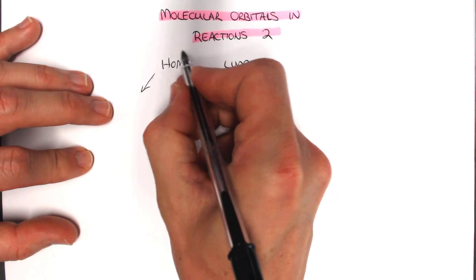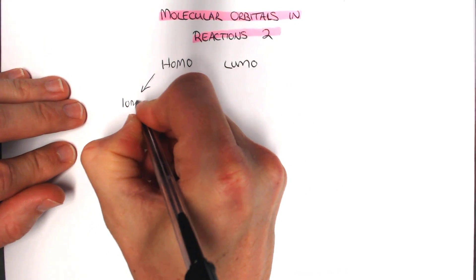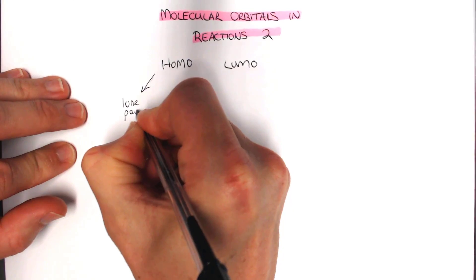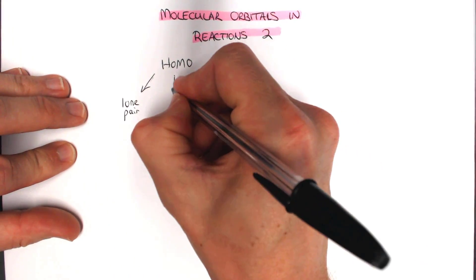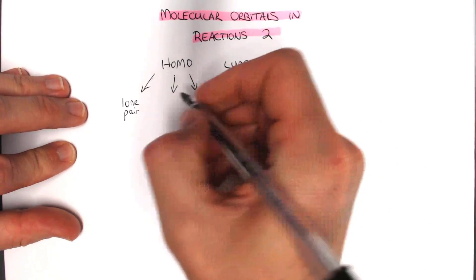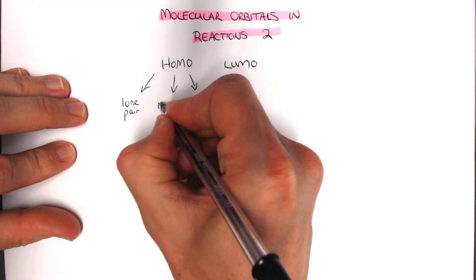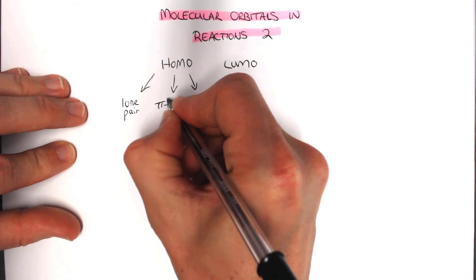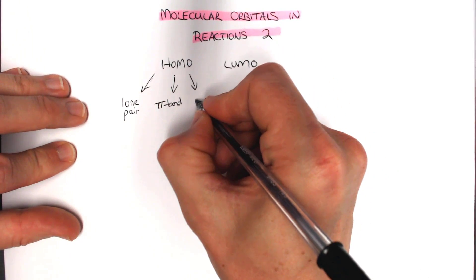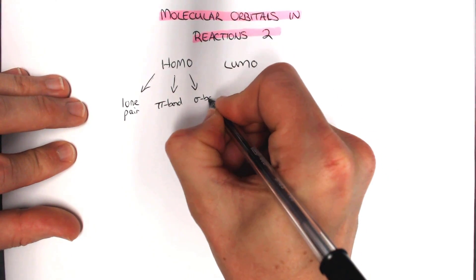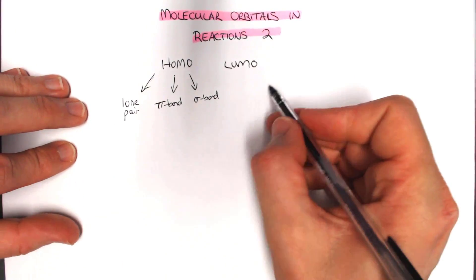To remind you, the highest occupied molecular orbitals are almost always lone pairs or lone pair electrons, but the other two important examples are the pi bond and the high-energy sigma bond. We'll see examples of that.